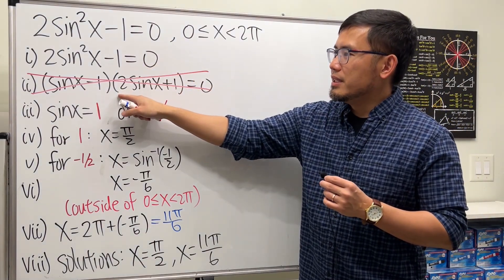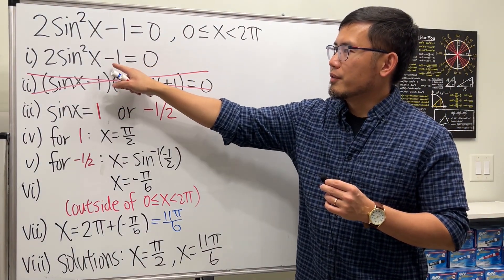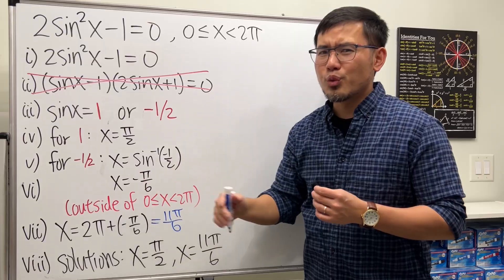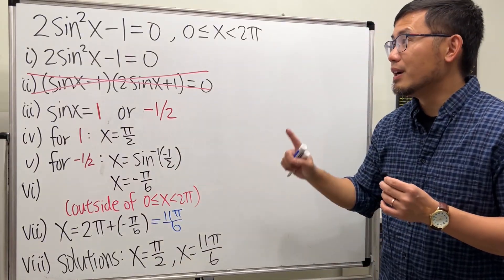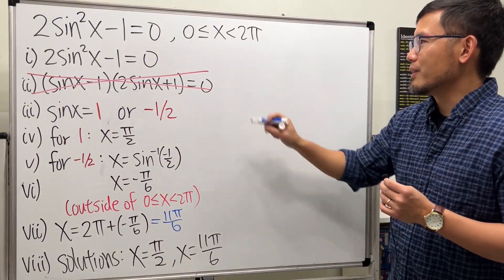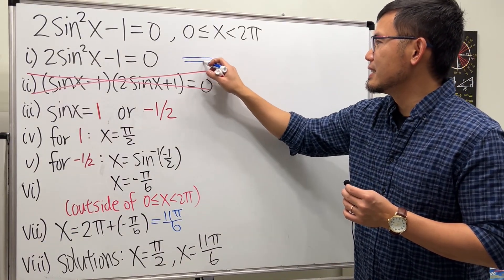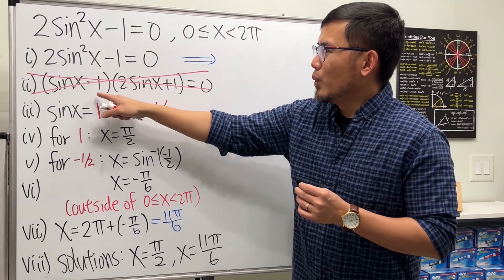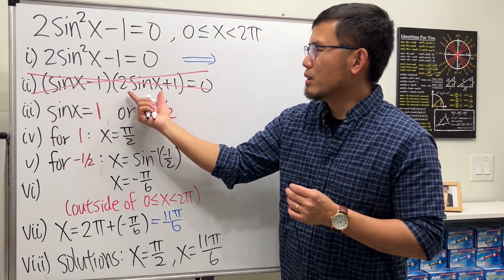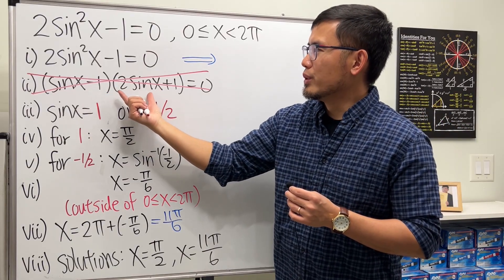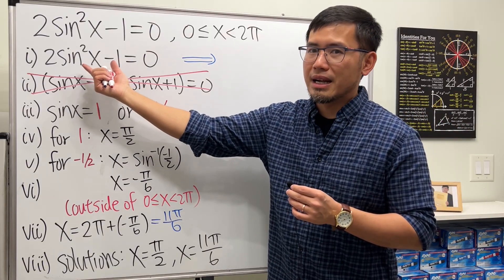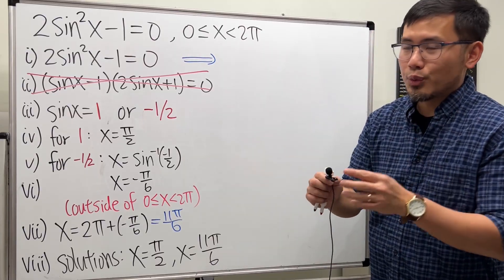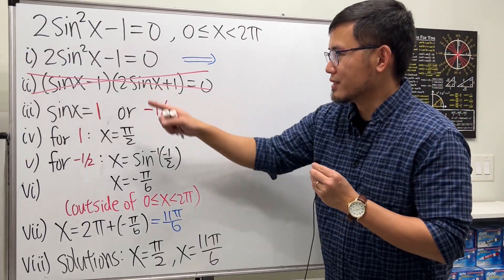This is actually the incorrect factoring, because the original expression is a difference of two squares. One way to see this is to multiply the given factored form out — you will see that you don't get the original expression back.